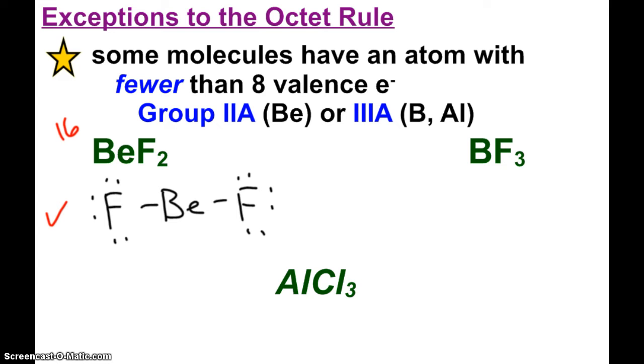Over here, boron and 3 fluorines. 3 fluorines is 21 valence electrons plus the 3 from boron. So that makes 24. And I end up having boron singly bonded to the 3 fluorines. They each have three lone pairs. And all the valence electrons are accounted for. And that is, we have data that backs up the fact that that is indeed the structure of boron and 3 fluorines, boron trifluoride.